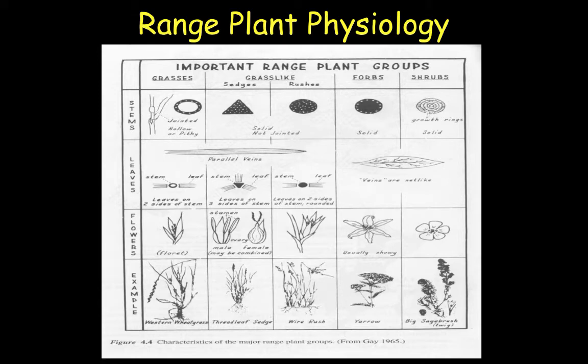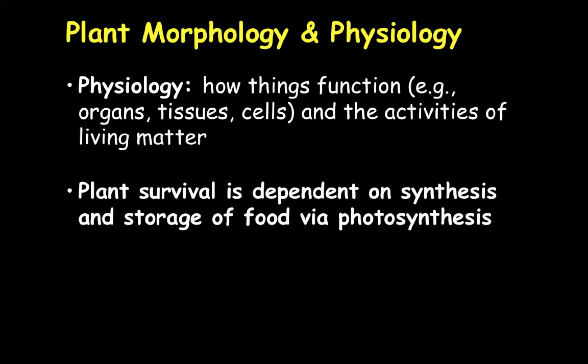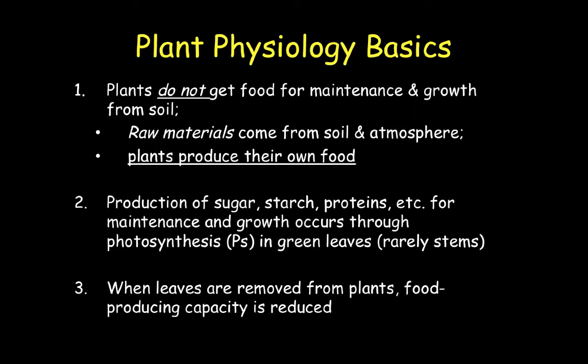Now that we've reviewed some of the morphological standpoints of our rangeland plants, we're going to start talking more in-depth about the physiology associated with those plants. Physiology refers to the function of the plant — the activities it has to go through for that organism to keep living. The survival of the plant is dependent on synthesis and storage of food, and this is all part of the photosynthetic process. Plants do not get their food from the soil — there are raw materials in the soil as well as the atmosphere, but plants actually produce their own food through photosynthesis.